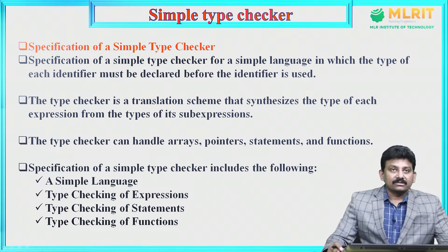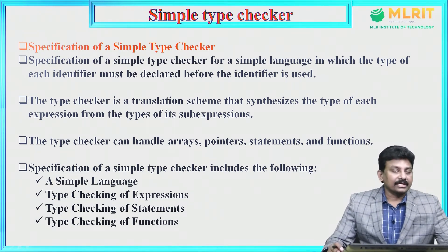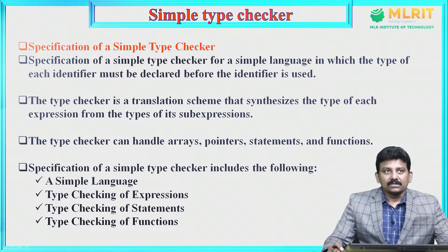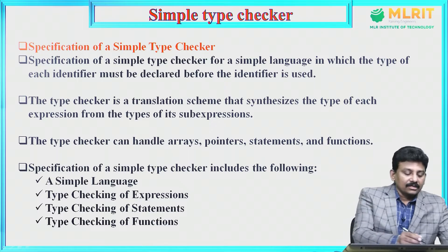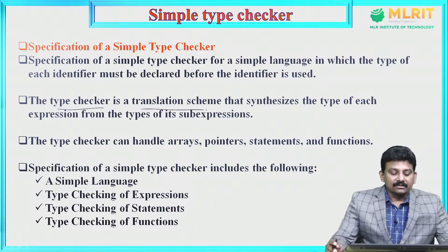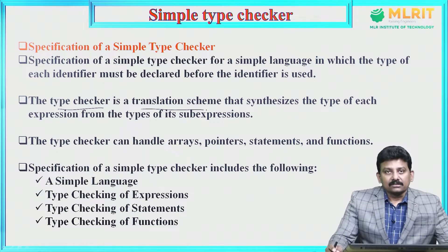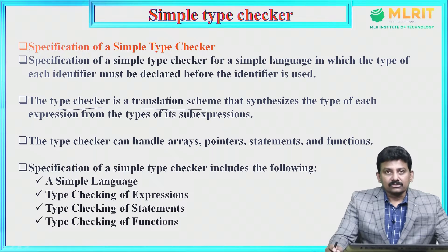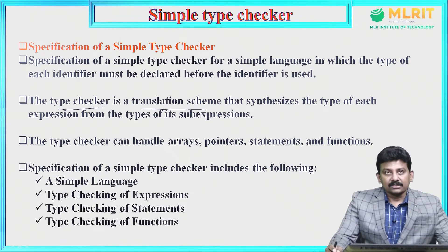Specification of a simple type checker for a simple language in which the type of an identifier must be declared before an identifier is used. Any variable must be declared before using it in any program. The type checker is a translation scheme that synthesizes the type of each expression from the type of its sub-expressions. The type checker can handle arrays, pointers, and statement functions.